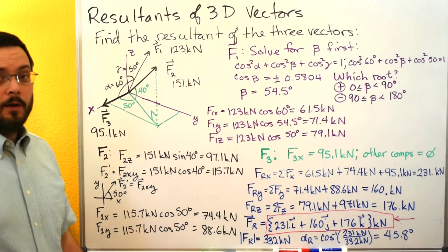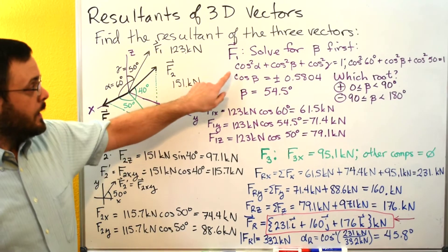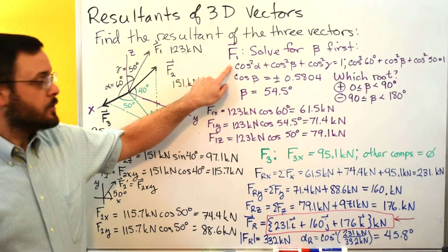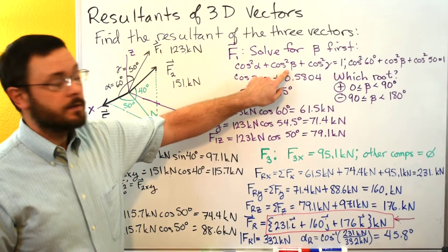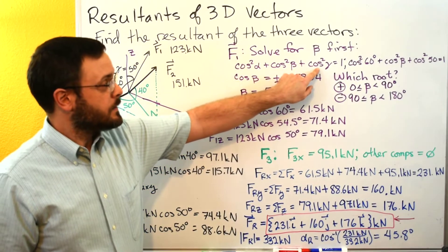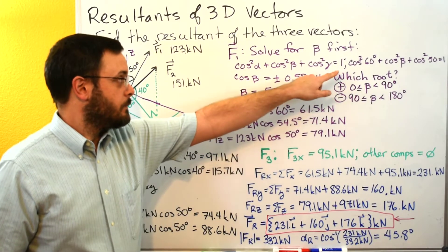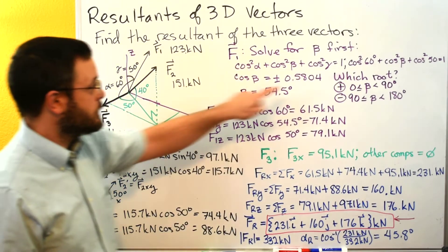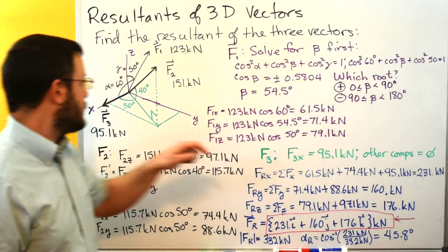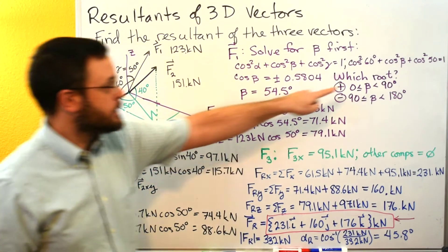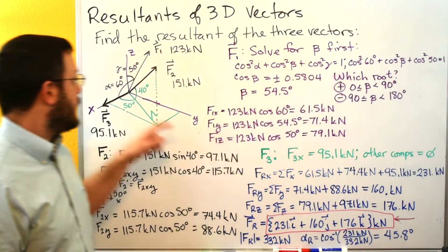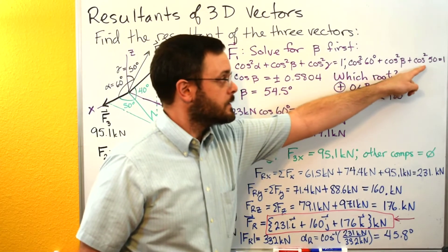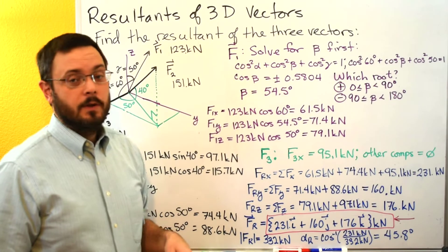We only have to be given two out of the three angles and we can calculate the third. This equation always holds with the coordinate direction angles: cosine squared alpha plus cosine squared beta plus cosine squared gamma is equal to one. We have the angle to the positive x-axis, that's our alpha, so we'll plug in 60 for alpha. We don't have beta so we'll plug in beta as an unknown, and then we have 50 as our gamma, the angle to the positive z-axis. That's equal to one.